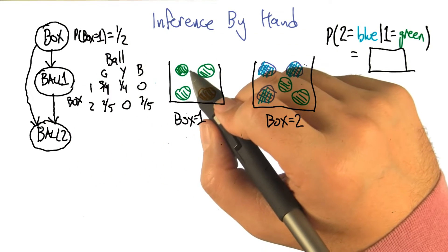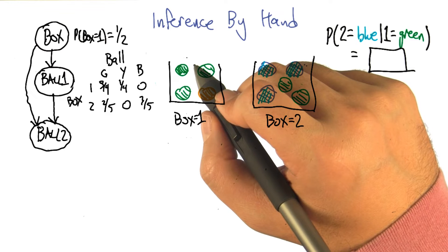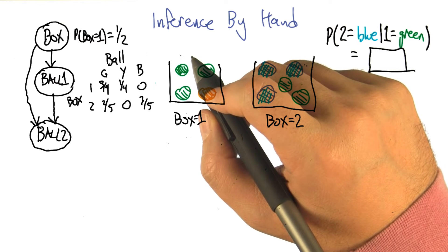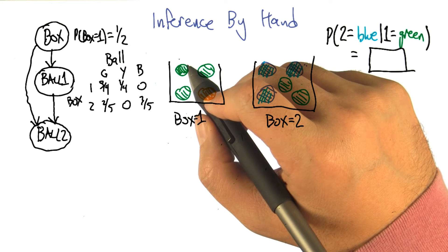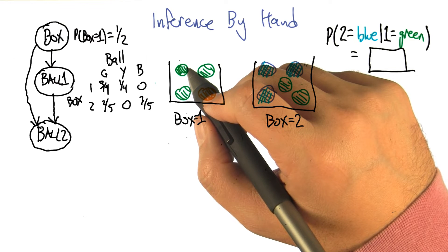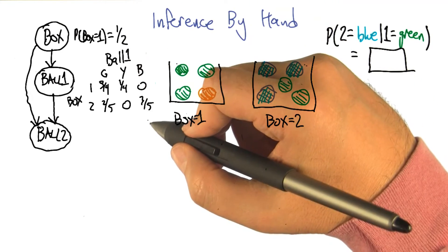And what would be really nice is if we were in the storm lightning and thunder case, where if I knew what ball one was, I would know what ball two was. But that's not true. Because in a case, for example, when ball one is green, it doesn't tell me what ball two is unless I also know which box I'm in. So we have to draw the arrow from box to ball two. Indeed.